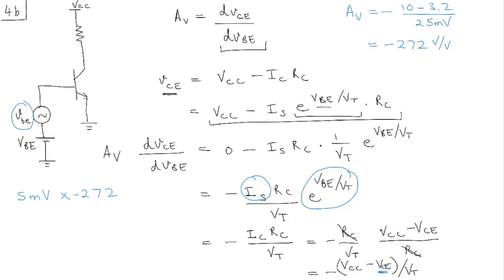The minus doesn't matter when it comes to the amplitude of the signal, right? So let's just ignore that minus. And we can then say that the amplitude at the output is 1.36 volts. So VCE, and let's say the change is equal to 1.36 volts. So that is 4B.